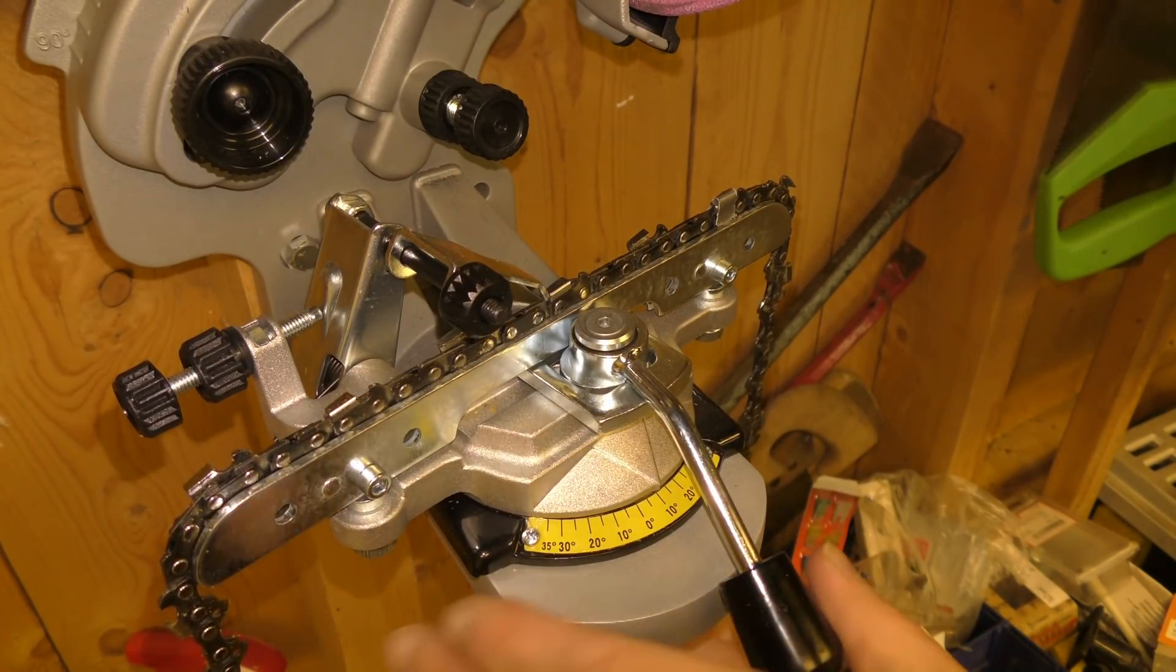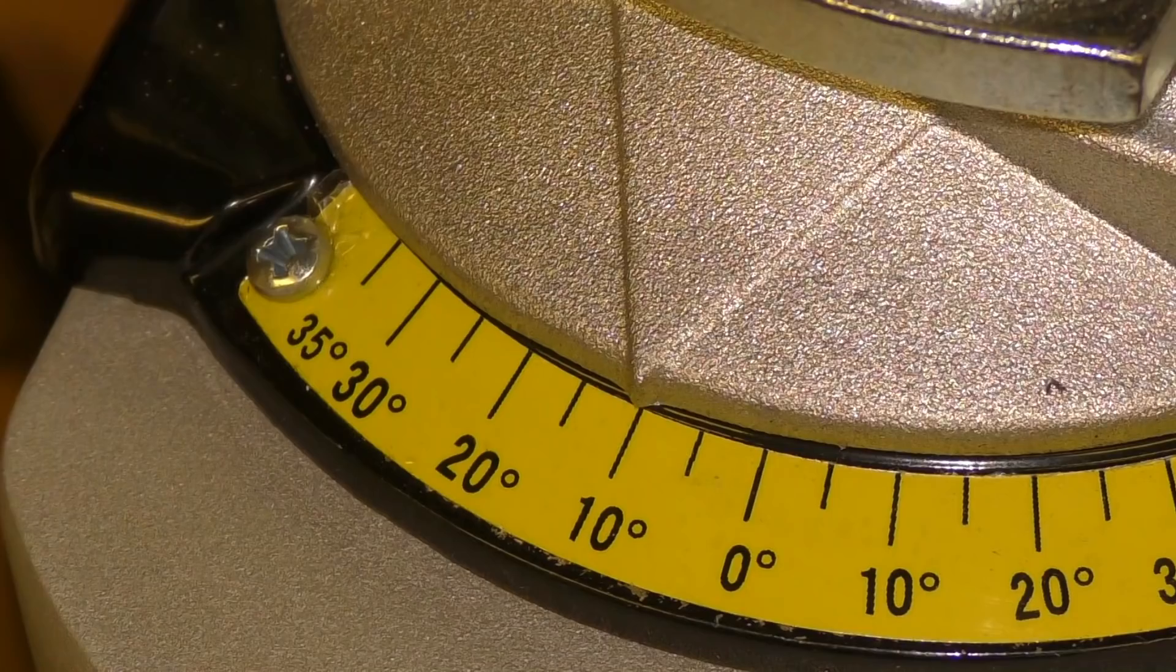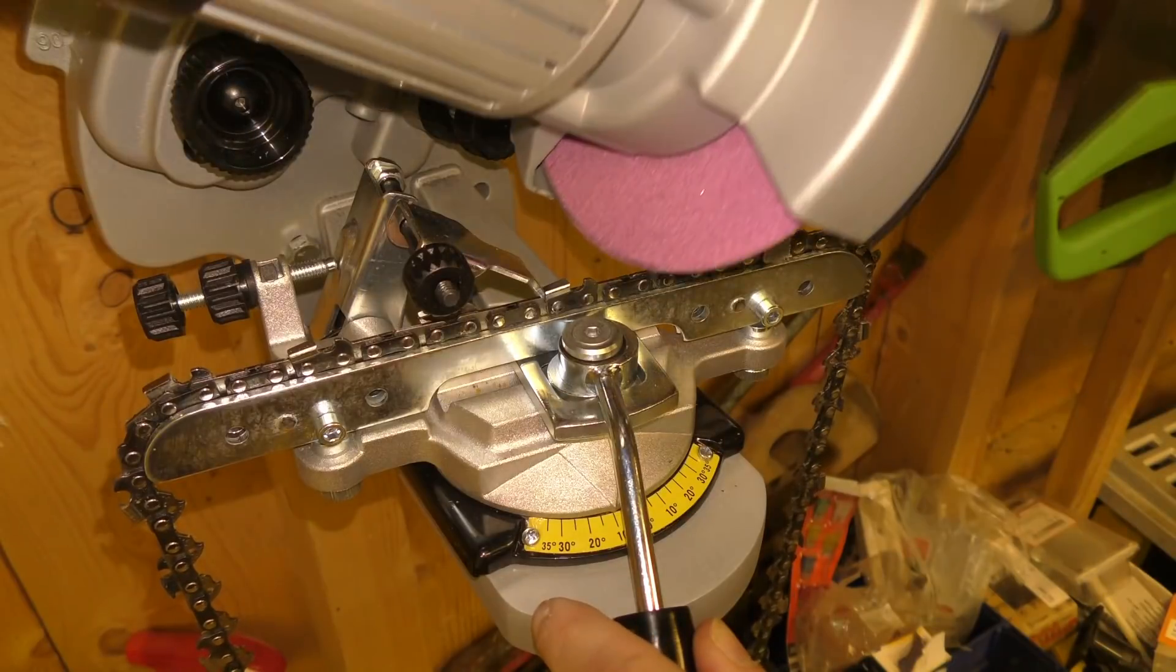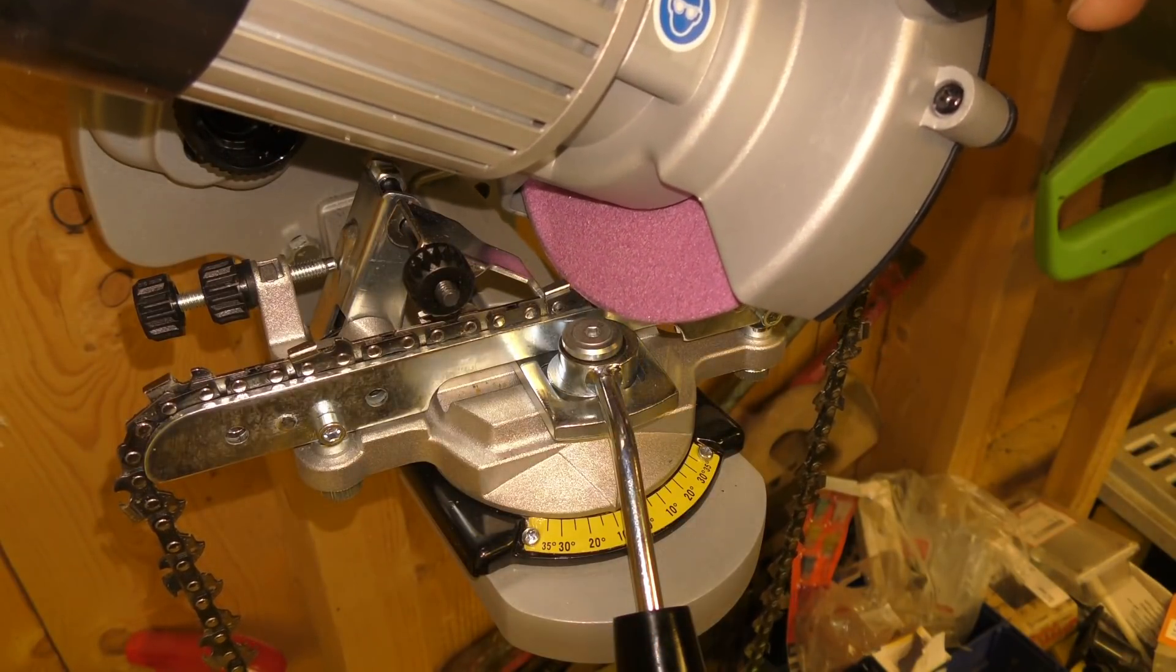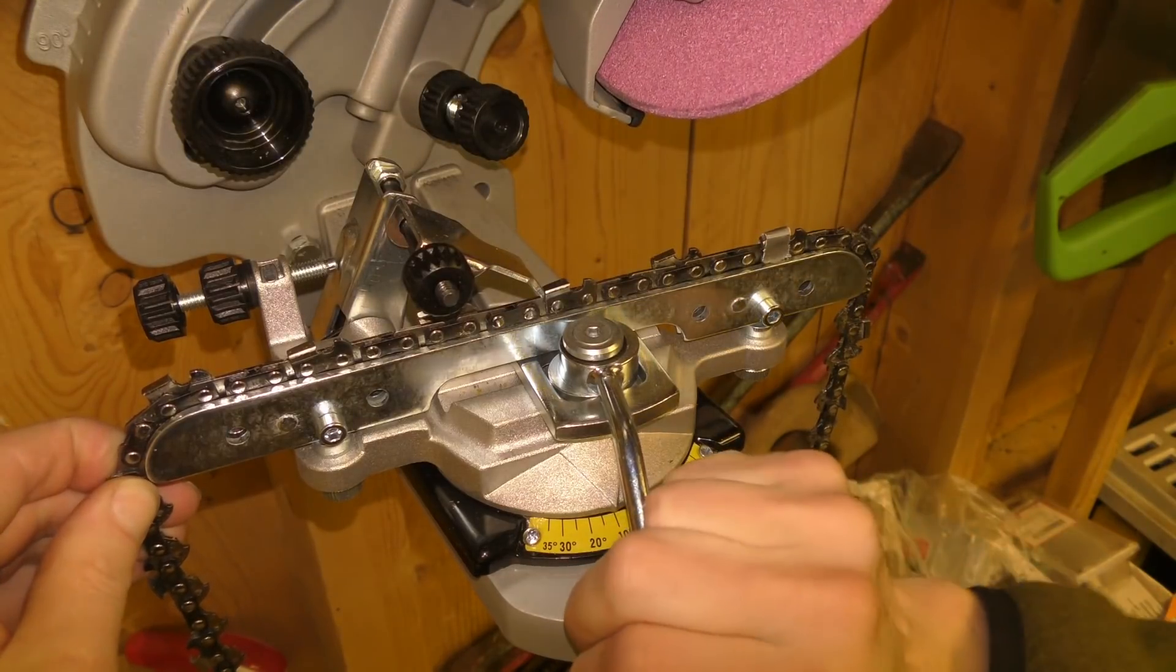When we have gone through the whole chain we changed the angle to negative 10 degrees. Then we go through everything again and see that the grind will be exactly the same as the other we have already done.